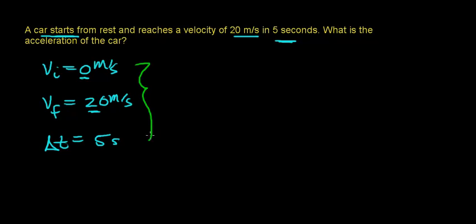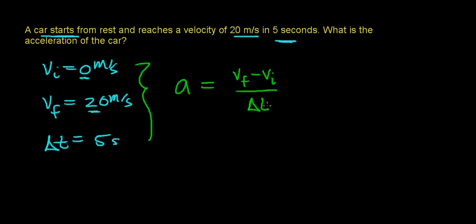Using this information, we can find the acceleration of the car. Acceleration is defined to be the change in velocity per change in time — that is, this is the change in velocity, and this is the time it takes to change that velocity. Another way to think about acceleration is how fast the velocity changes.